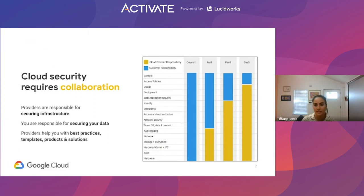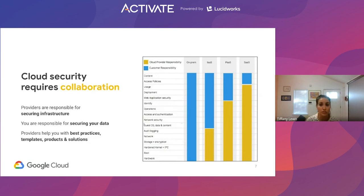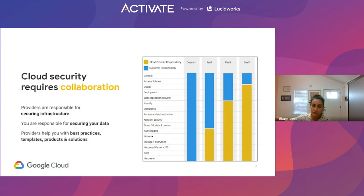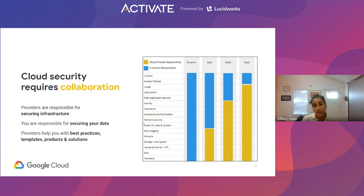When we talk about shared responsibility and the cloud service provider's responsibility, table stakes is that the cloud service provider's responsibility is to essentially maintain the integrity and security of the infrastructure underlying the cloud platform that the customer is using. This is true for IaaS, PaaS, SaaS, and container as a service. The further right that we go on this continuum — from infrastructure as a service to platform as a service to software as a service — the more responsibility the cloud service provider takes on, and the less responsibility the customer has.